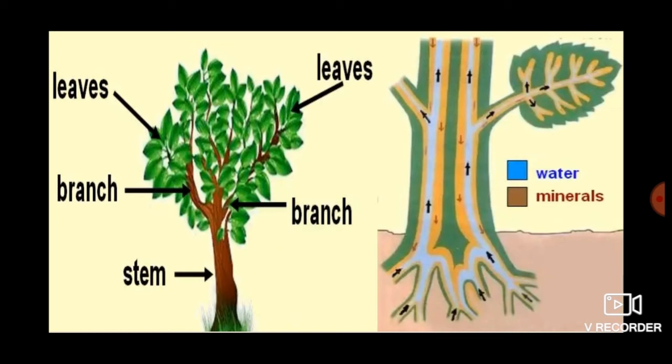It carries water and nutrients absorbed by the roots to the leaves and other parts of the plant. Stems of some plants store food and are eaten as vegetables. Potato, ginger, and sugar cane are examples of such types of stems.